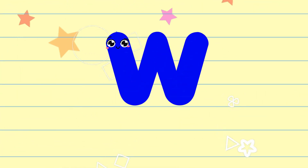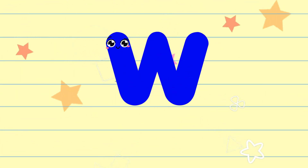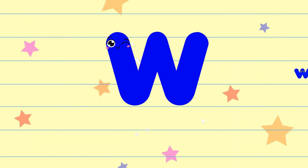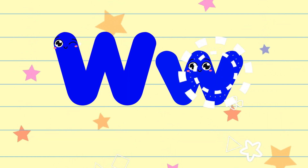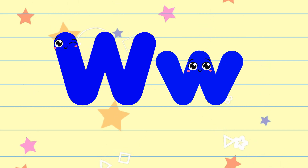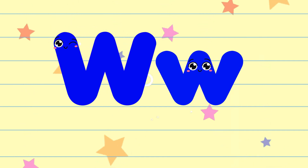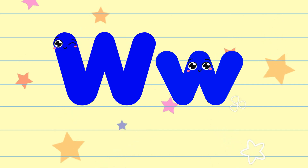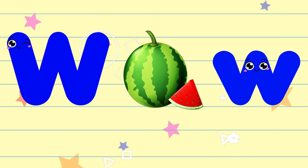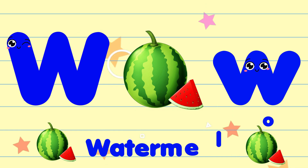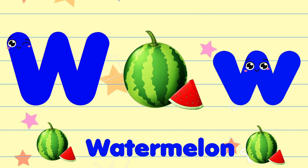W. The color of the letter W is blue. The sound of the letter W is v. W is for watermelon.